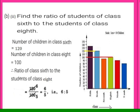Second subdivision: find the ratio of students of class 6th to class 8th. From the bar graph, class 6th has 120 children and class 8th has 100 children. The ratio is 120/100, which simplifies to 6:5.